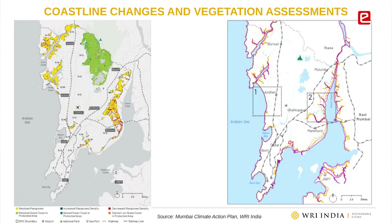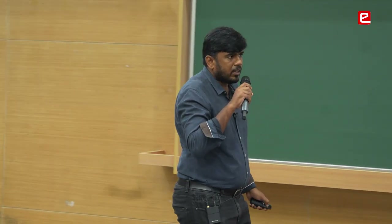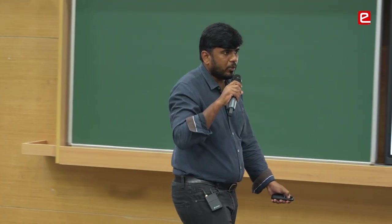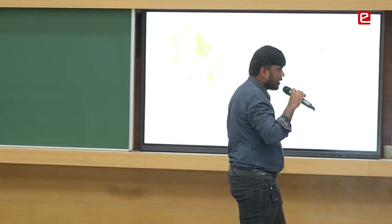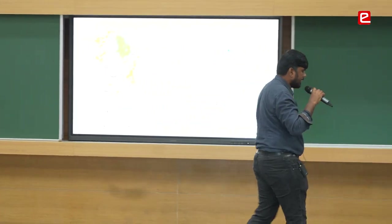This map here — the orange line is the older coastline and the pink line is the newer coastline for Mumbai. This is satellite-based information. We studied multiple satellite images and came up with that.